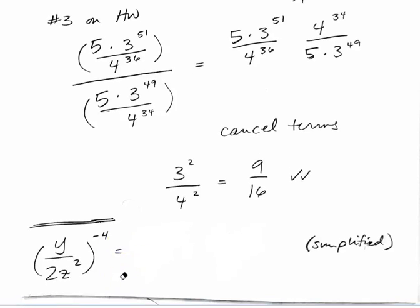So we'll go one more down here. So we've got a quantity y over 2z squared to the negative 4 power. And so I really would encourage you to take your time, space your work out. Use room so you can see it. And so what I'm going to do is really kind of two steps at once.